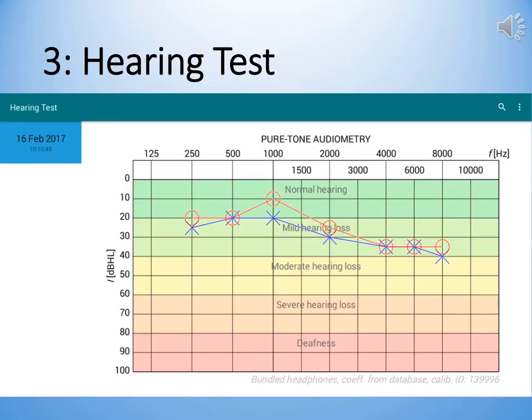Doing a hearing test is quite revealing. Do it on yourself first and try it out on your family before you try it out on your patients. This is the result of my hearing test — you can see that I have a mild hearing loss of the higher frequencies in both ears, more or less symmetrically. This is normal as you get older, so I suspect some of you will have a hearing test that looks similar to mine.